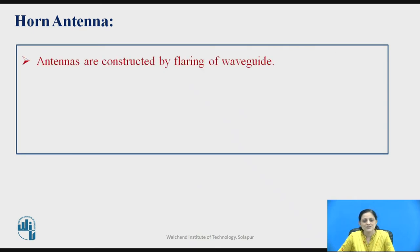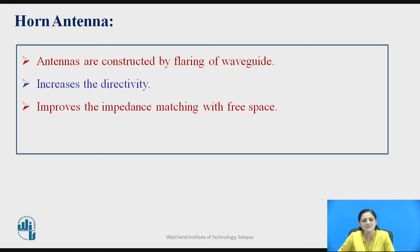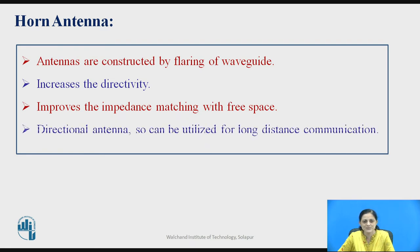Let us recall some key points of horn antennas. Antennas which are constructed by the flaring of the waveguide are called horn antennas. Horn antenna is used to increase the directivity. It is also used to improve the impedance matching with the free space. It is a directional antenna, so it can be utilized for long distance communication purposes as well.